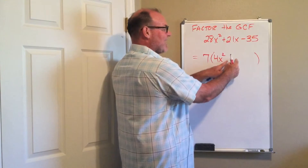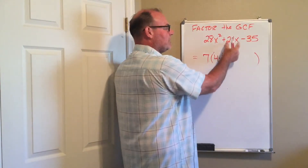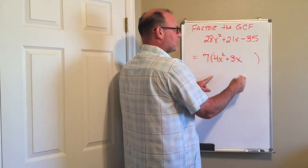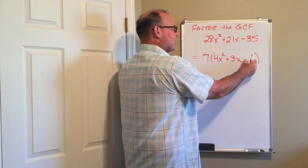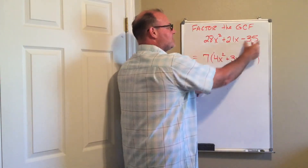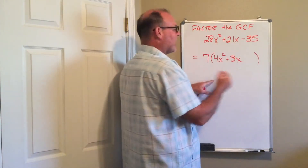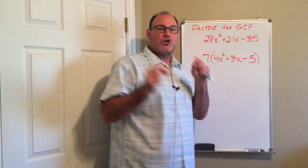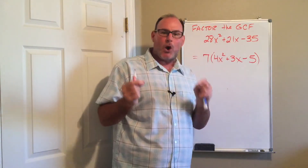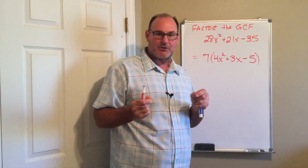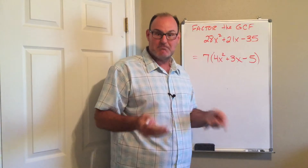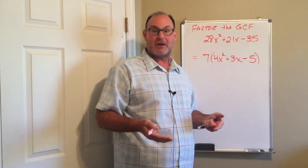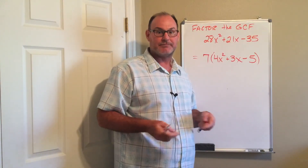What second term times 7 would give me 21x? That would be 3x. And what last term times 7 gives me negative 35? The answer would be negative 5. You can always, always, always check factoring by re-multiplying — it's a very quick process and a quick way to see if you got the right answer.